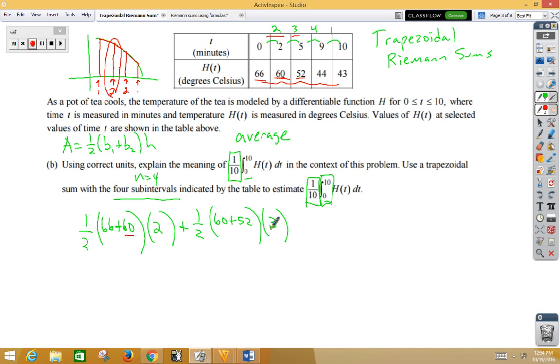In our third trapezoid, 1/2. Again, we're going to have a shared side. This time, our 52 gets used twice. We're using 52 and 44. Our height this time is 4.